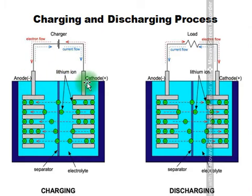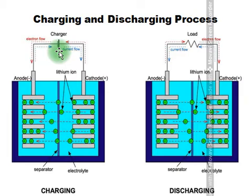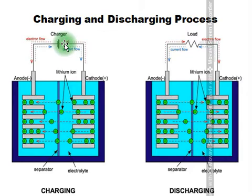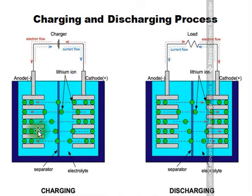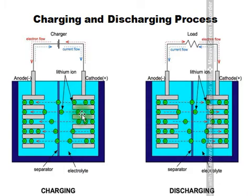During charging, with the anode and cathode identified, an external power supply is connected to charge the battery. Due to this external power supply, an oxidation reaction takes place — specifically at the cathode of the battery.